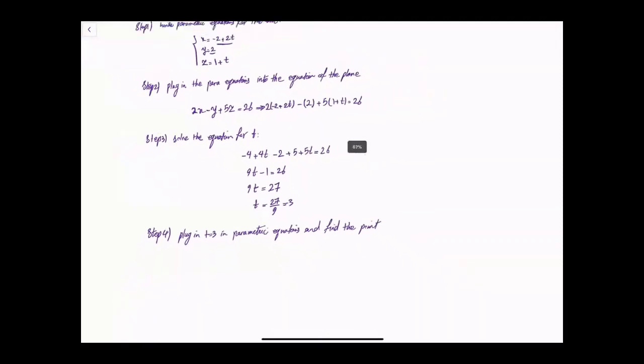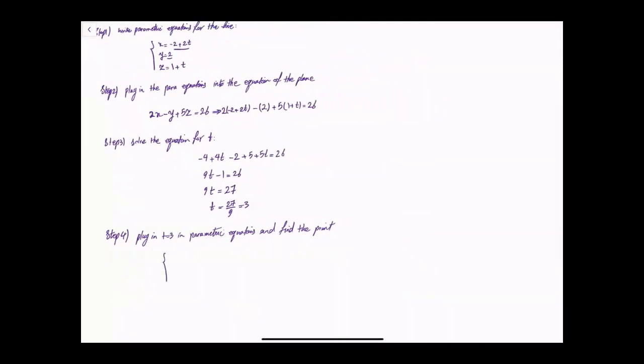So x is -2 + 2(3), y is 2, and z is 1 + 3. This gives me 6 - 2 = 4, y is 2, and z is 4. So the point of intersection is (4, 2, 4).